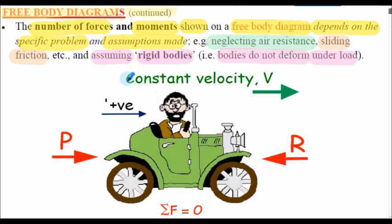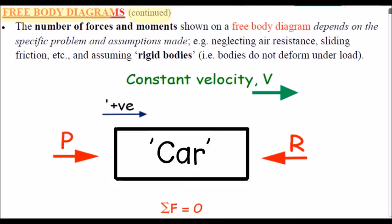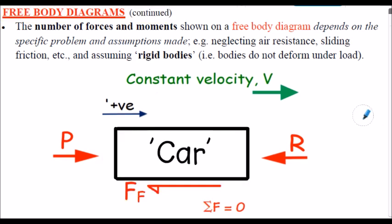Here's a free-body diagram related to constant velocity V of our vehicle. We show applied load P and a resisting force, with our positive direction indicated. We could apply Newton's first law — summation of all forces equal to zero — because we're moving at constant velocity. Note we do not need a complicated picture of the car; the free body can simply be a rectangular block. Applied to the car, we may also include a friction force from the contact of tyres with the ground.